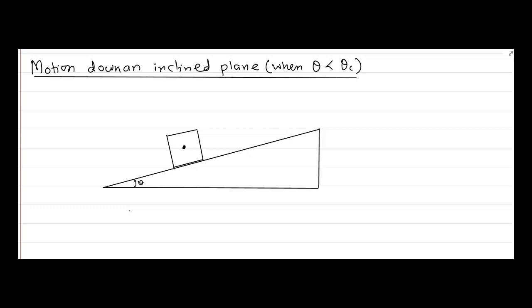We are going to analyze the motion of an object down an inclined plane. We have an inclined plane with angle theta and an object placed on it. We are taking a case where the angle of inclination theta is less than the angle of repose, which means this object is not able to slide down on its own. If the angle of inclination were greater than the angle of repose, the object would slide on its own.